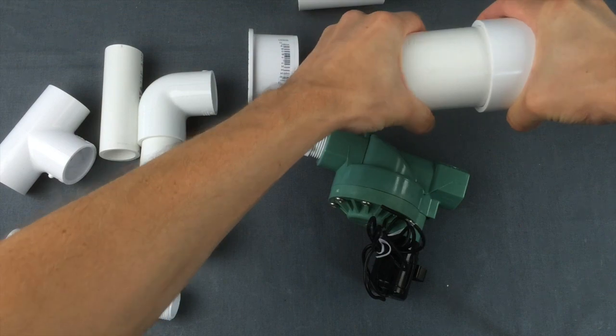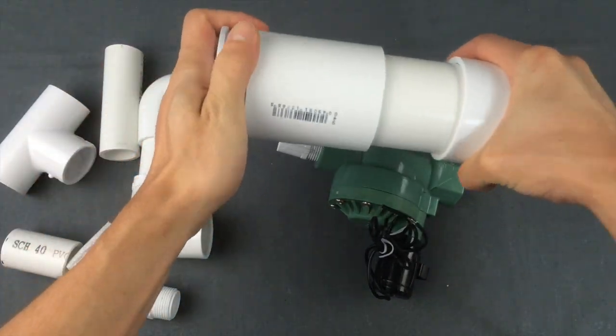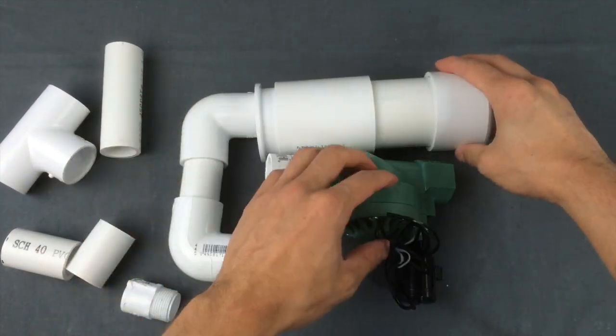I planned out the shape of the launcher by dry fitting PVC together with the sprinkler valve. Although I can imagine how it looks, I need to physically see and hold it to know how it feels.